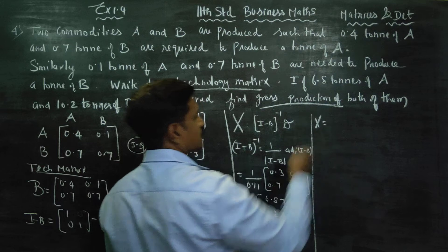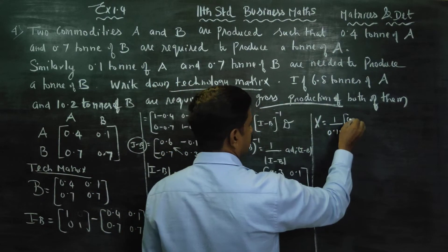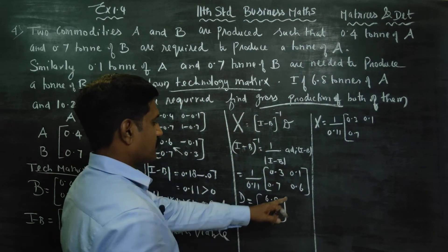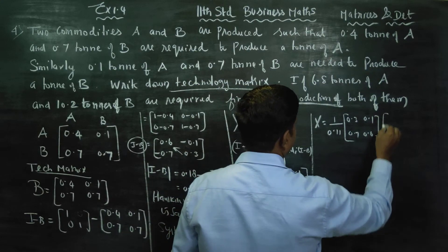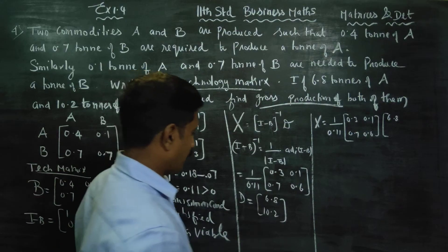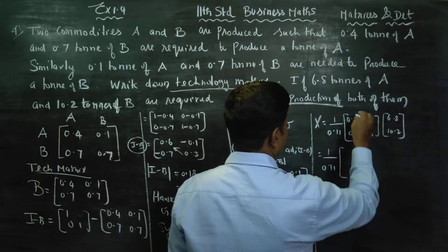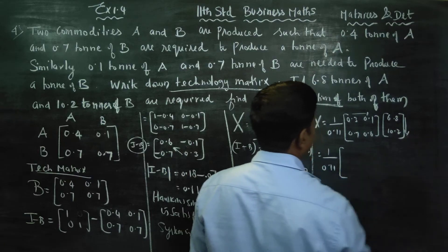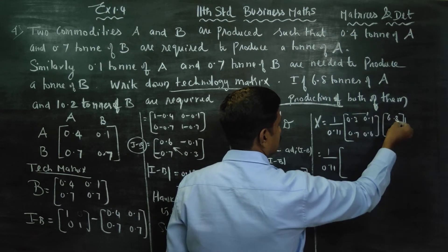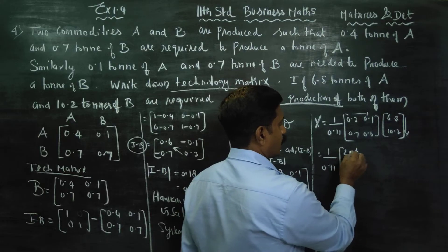X equals gross output. (I minus B) inverse equals 1 divided by 0.11 into the adjoint matrix: 0.3, 0.1, 0.7, 0.6. Multiplying row into column: 0.3 × 6.8 = 2.04; 0.1 × 10.2 carry; 0.7 × 6.8 = 4.76 with carry; giving intermediate results for both rows.